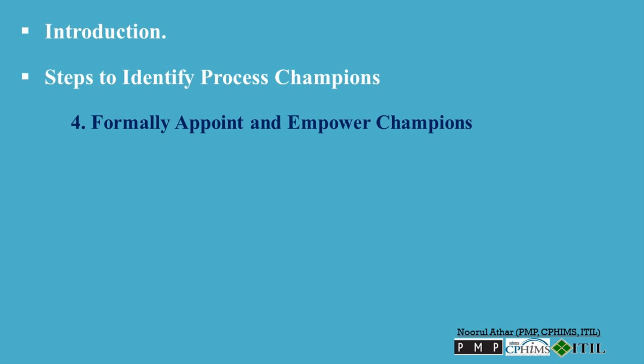Step 4: Formally appoint and empower champions. Formal recognition — officially recognize the appointed champions. Formal recognition helps in establishing their authority and responsibility in leading quality improvement efforts. Empowerment — empower champions with the necessary authority and resources to lead changes effectively. This includes access to data, personnel, and financial resources.